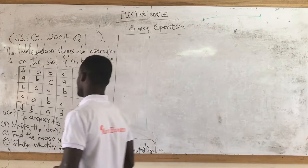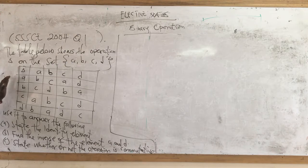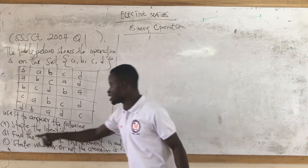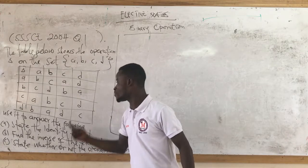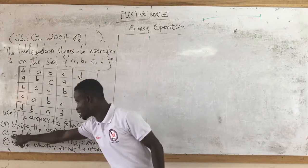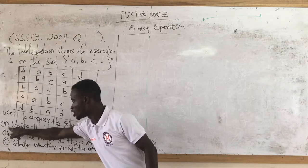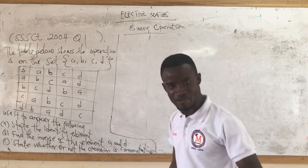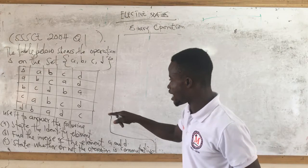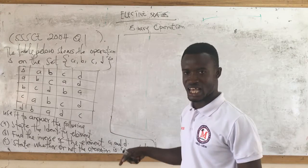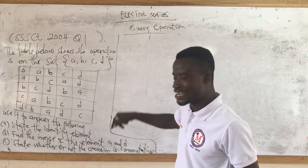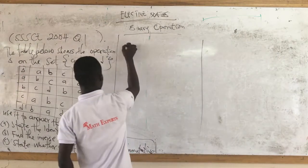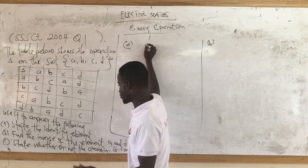Let's go straight to the point. Study the table carefully. Even if part (a) says find the inverse and part (b) says find the identity element, you should do the identity element first. Without the identity element you can never know the inverse. So let's do the identity element first.